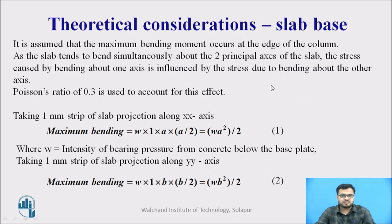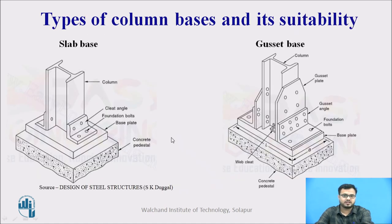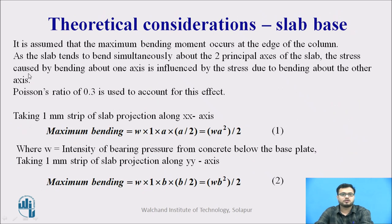Now we will see what is meant by slab base, its design steps, and after that we will see the gusseted base. For the theoretical background: it is assumed that maximum bending moment occurs at the edge of the column. As the slab tends to bend simultaneously about two principal axes, the stress caused by bending about one axis is influenced by the stress due to bending about the other axis. Due to this effect, a Poisson's ratio of 0.3 is used.